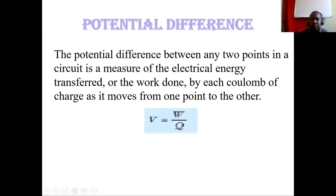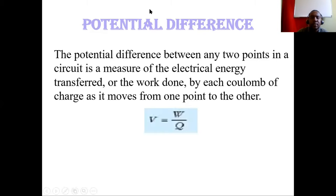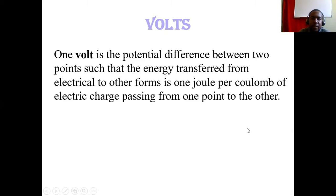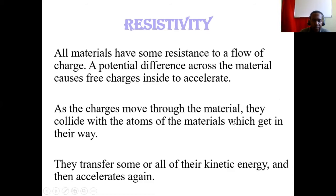The next term is potential difference, which is basically the difference in charge from one side of a circuit to the next side. Voltage or potential difference V is equal to work done over the charge amount. One volt is a potential difference between two points such that the energy transferred from electrical to other forms is one joule per coulomb — from the equation V equals W over Q.